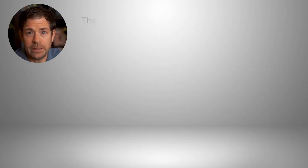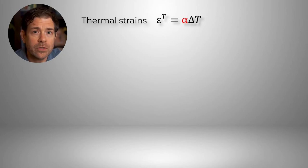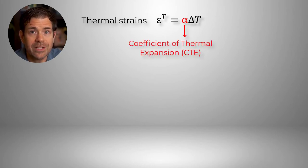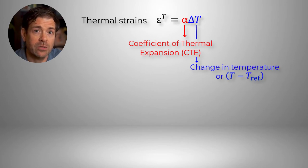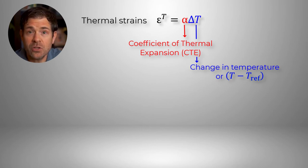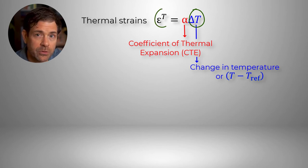Thermal strains are calculated using the equation: thermal strain equals alpha times delta T, where alpha is the coefficient of thermal expansion, or CTE in short, and it is a material property. The delta T refers to the change in temperature, and can be written as T minus T_ref, where T is the current temperature of the material, and T_ref is the temperature at which thermal strains in the material can be considered to be zero. Based on this equation, we can see that any change in temperature leads to generation of thermal strains.